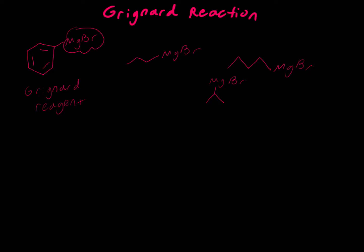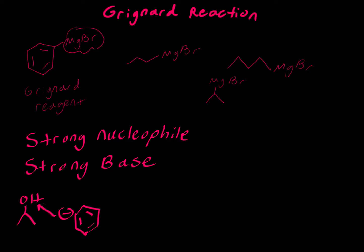About this Grignard reagent: it is a strong nucleophile and it is a strong base. So if we have any acidic protons in our other reagent or reactant, it will react with that. If we have an alcohol, our Grignard reagent would react with it immediately.